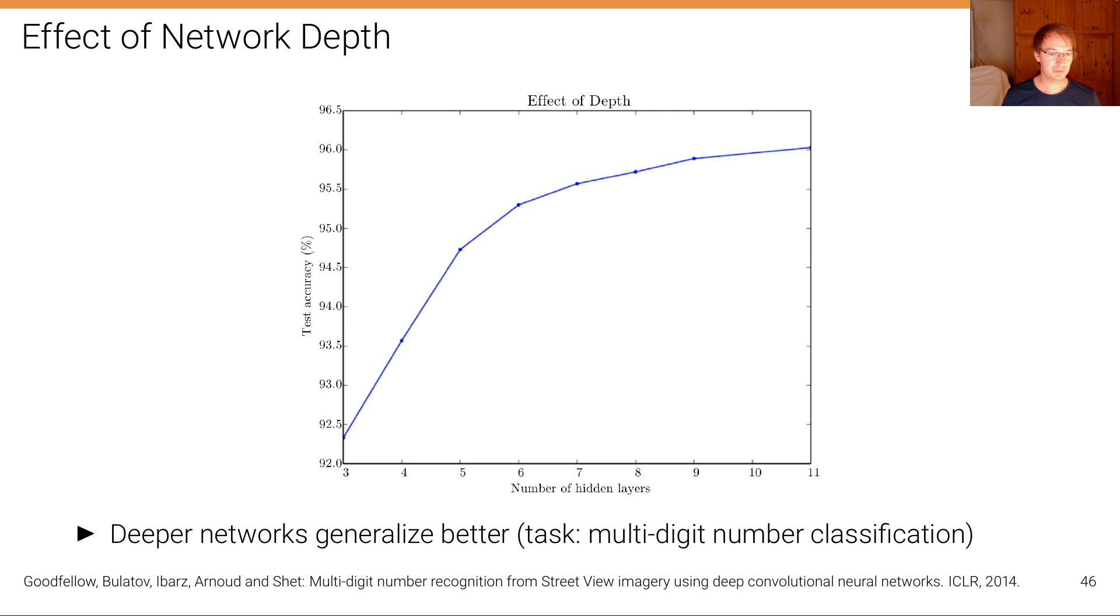This is from the paper from Goodfellow et al. on a task of multi-digit number classification, which shows that deeper networks generalize better. On the x-axis we have the number of hidden layers, and on the y-axis we have the test accuracy. So effectively the inverse of the generalization error. Higher is better. You can see that the performance steadily increases when increasing the number of hidden layers.